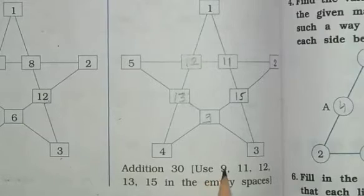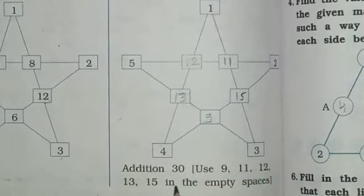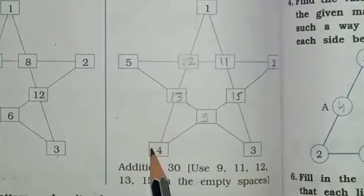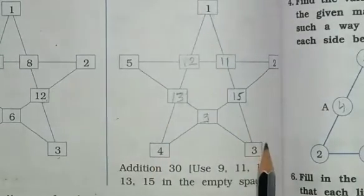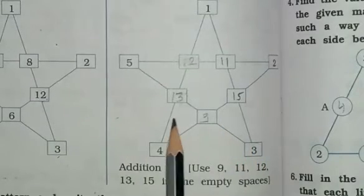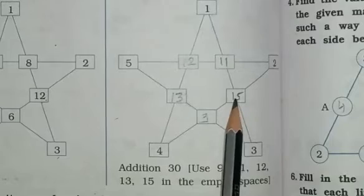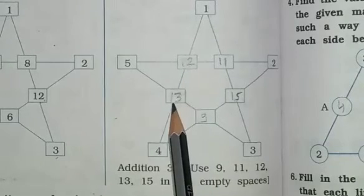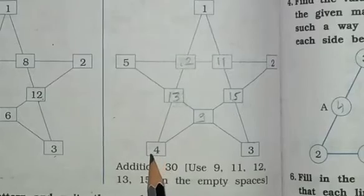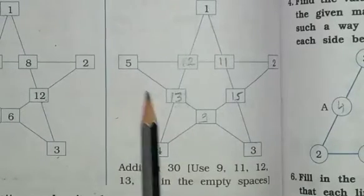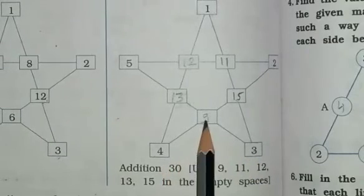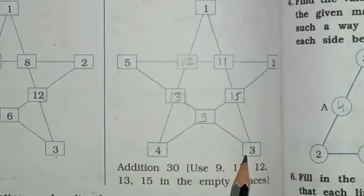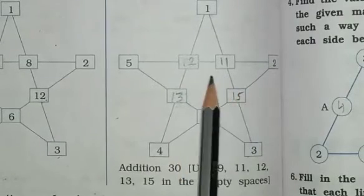Addition to 30 — use 9, 11, 12, 13, 15 in the empty spaces. यहां पे space में हमें complete करना है. यहां पे भी 30, यहां पे भी 30, वैसे हमें लिखना है. तो यहां पे आएगा: 12, 11, 15, 9 and 13. 1 and 12 is 13; 13 plus 13 is 26; 26 plus 4 is equal to 30. वैसे 5, 13, 9 and 3 is equal to 30. 4 plus 9 plus 15 plus 2 is equal to 30. 1 plus 11 plus 15 plus 3 is equal to 30. यानि जहां पे भी हम plus करेंगे उसका answer हमें 30 चाहिए.